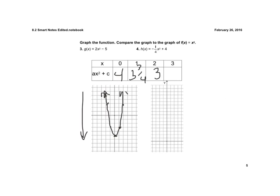3 squared is 9, 9 times negative 1/4, so negative 1/4 times 9 is negative 9/4, which is actually negative 2 and 1/4, plus 4 would be 1 and 3/4.